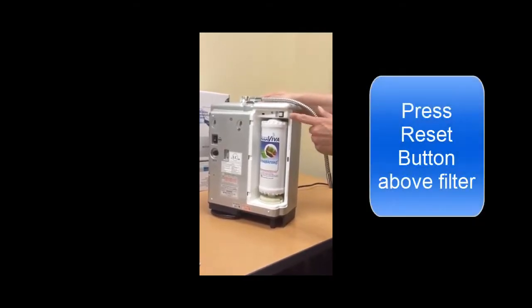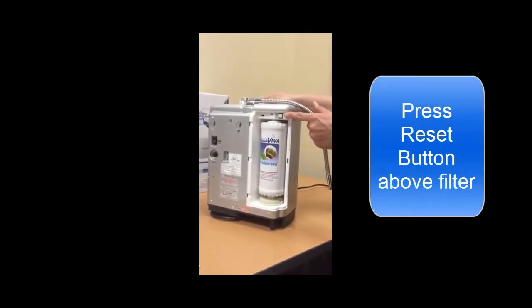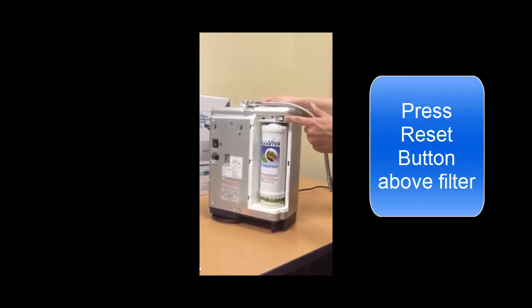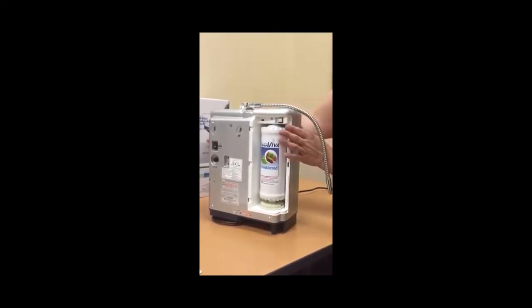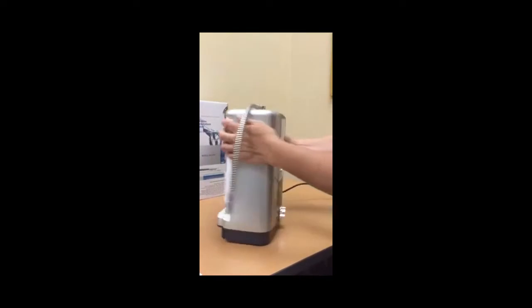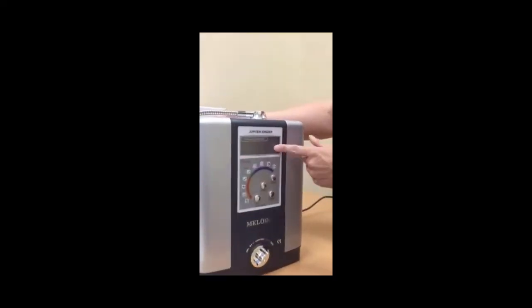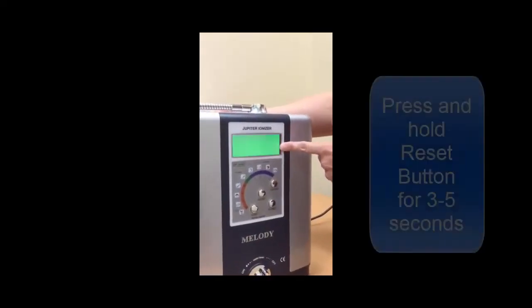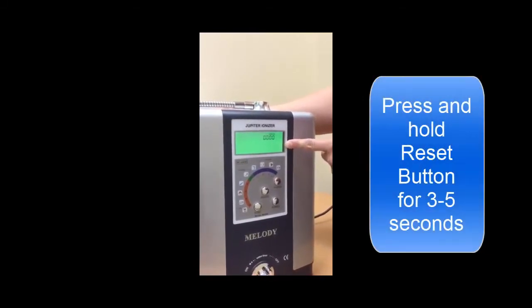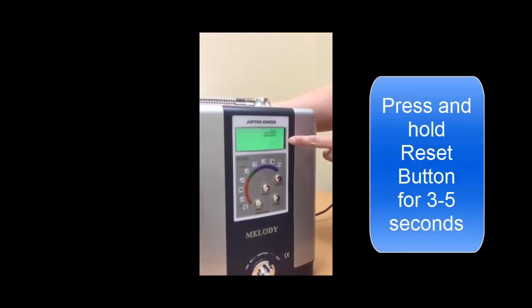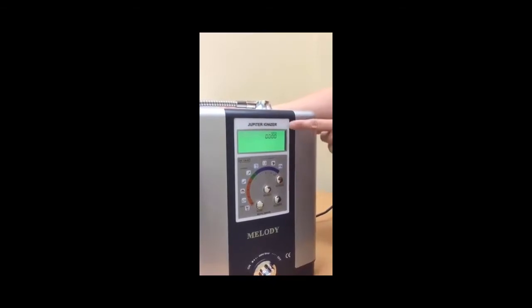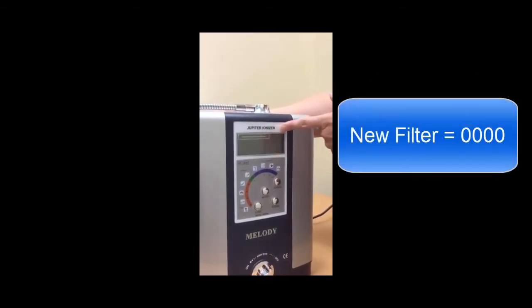You'll need to reset the filter counter using the filter reset button in the filter compartment above the filter. You will press and hold the filter reset button while watching the front panel. When you press and hold the button for 3-5 seconds, a chime will sound and the filter counter will return to four zeros.